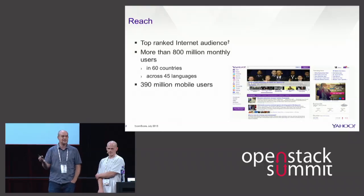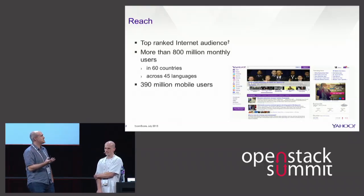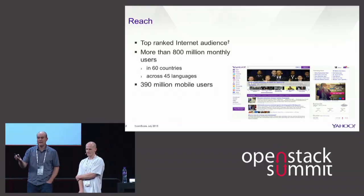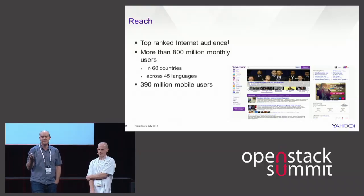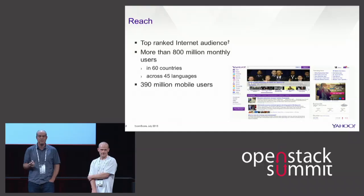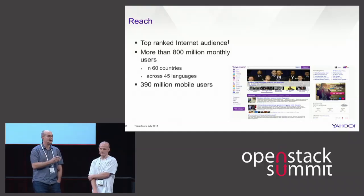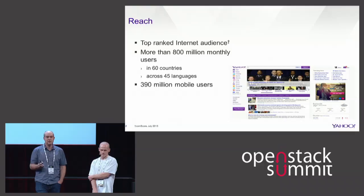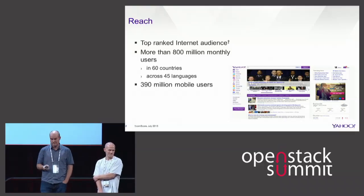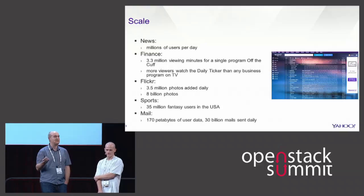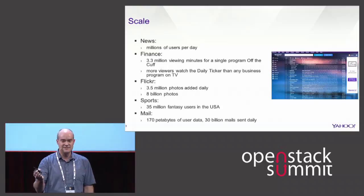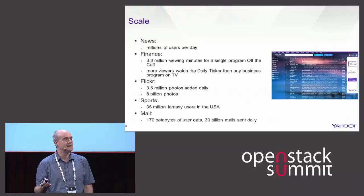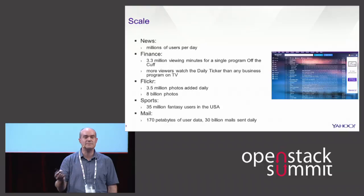First, I want to set some dimensions of the problem we're tackling at Yahoo. When we talk about infrastructure at Yahoo, we're talking about some fairly large numbers to support this kind of audience. We're the top-ranked internet audience, over 800 million monthly users, global, across many countries and languages, and we're mobile — 390 million mobile users. In terms of scale, any one of our web properties involves millions of users, huge amounts of storage and user activity. OpenStack needs to be able to scale to these dimensions.